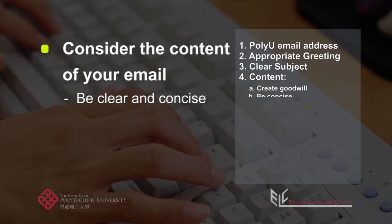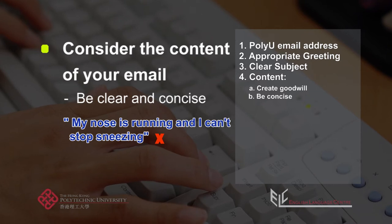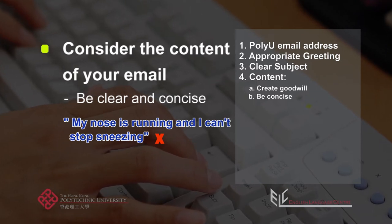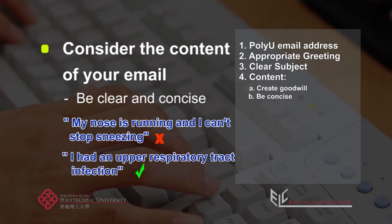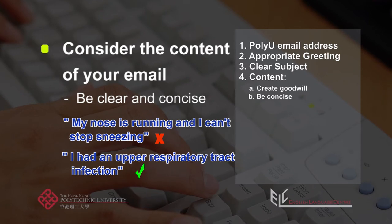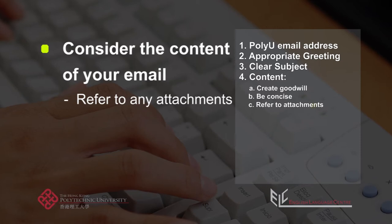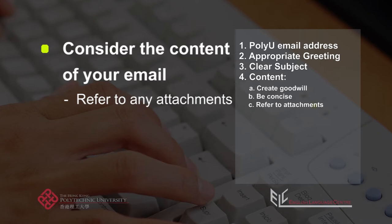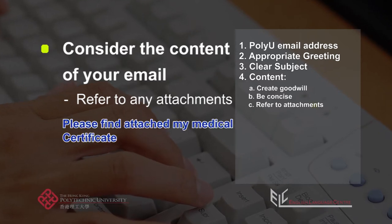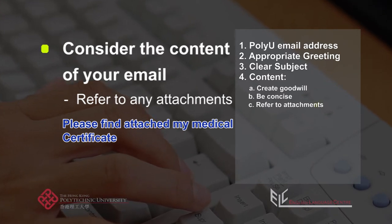Be clear and concise. Avoid mentioning details you think are unnecessary. If you're sick and writing to explain your absence, it might not be necessary to explain your symptoms. However, it might be appropriate to mention what the sickness is. Refer to any attachments — readers often may not notice that an email has something attached, so in the email you should refer them to the attachment. Attaching the file before you type anything is also a good way to ensure that you have attached what you intended.